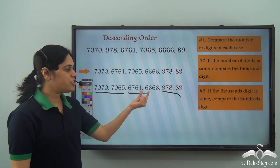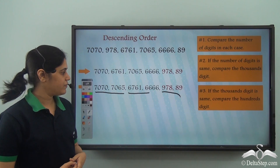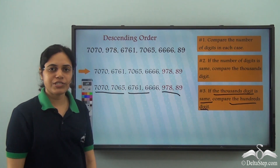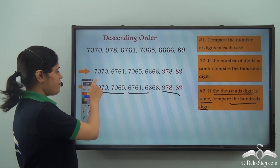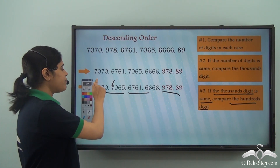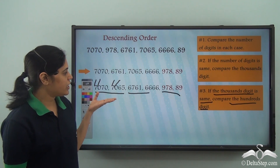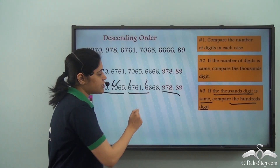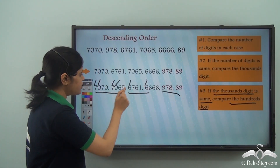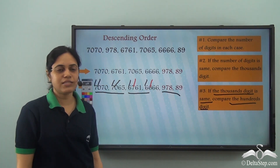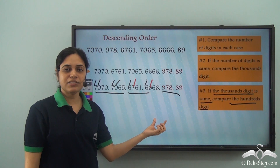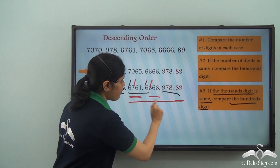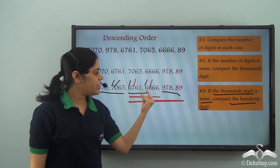Now how do I arrange these? We go to rule number three: if the thousands digit is the same, compare the hundreds digit. For 7070 and 7065, the thousands digit is the same, but the hundreds digit is also the same, so rule three does not apply here. For 6761 and 6666, the thousands digit is the same, but the hundreds digit is seven versus six — seven is greater than six, so 6761 comes before 6666 in descending order.